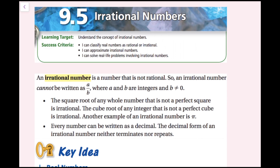An irrational number is a number that is not rational, so an irrational number cannot be written as a over b, where a and b are integers and b is not equal to zero. Rational means you can write it as a ratio of two integers, so irrational means you cannot. The square root of any whole number that is not a perfect square is irrational. The cube root of any integer that is not a perfect cube is irrational. Another example of an irrational number is pi.